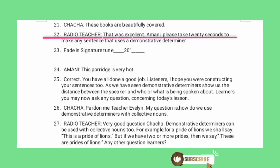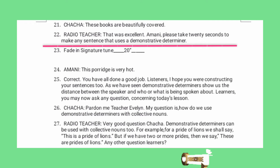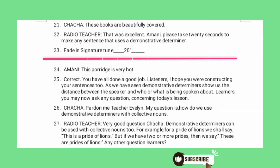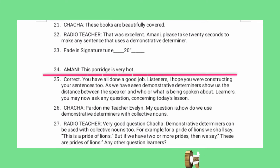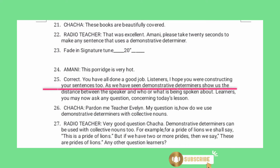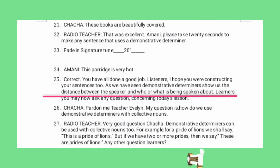Amani, please take 20 seconds to make any sentence that uses a demonstrative determiner. This porridge is very hot. Correct. You have all done a good job. Listeners, I hope you are constructing your sentences too. As we have seen, demonstrative determiners show us the distance between the speaker and who or what is being spoken about.